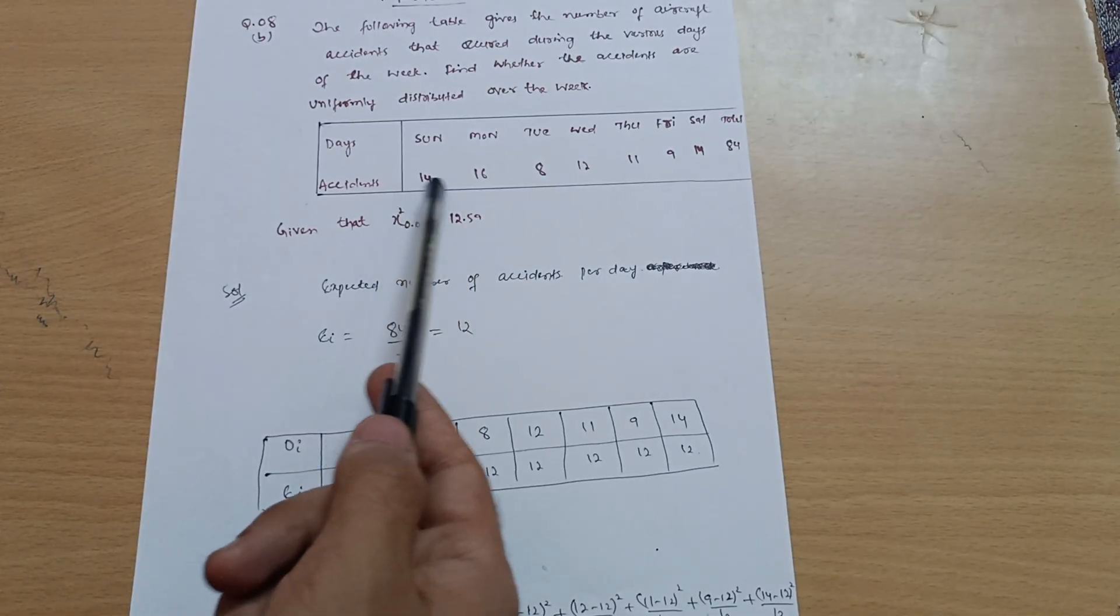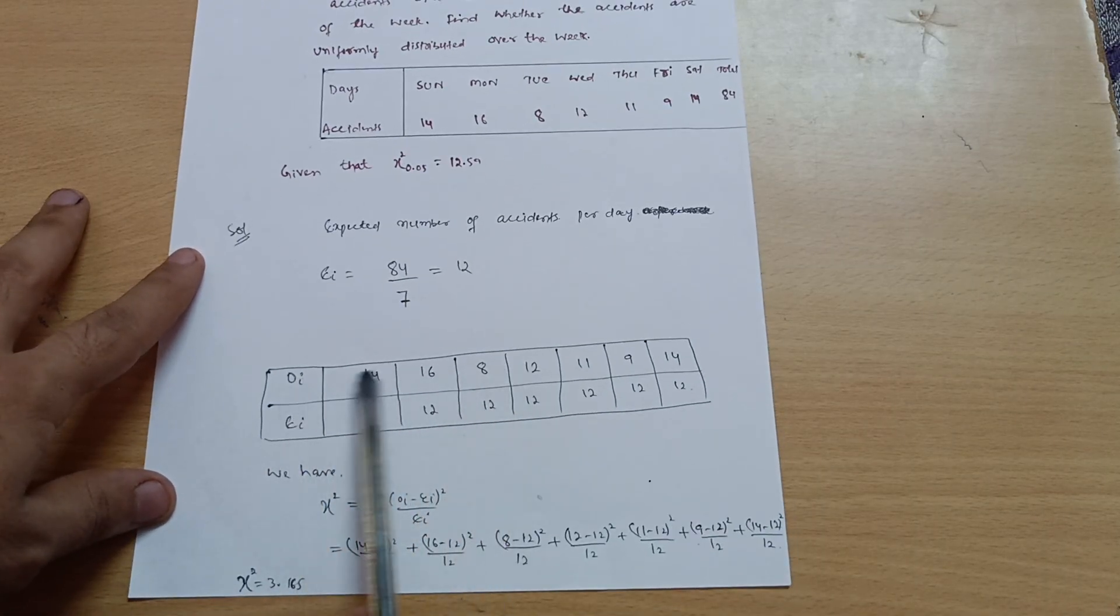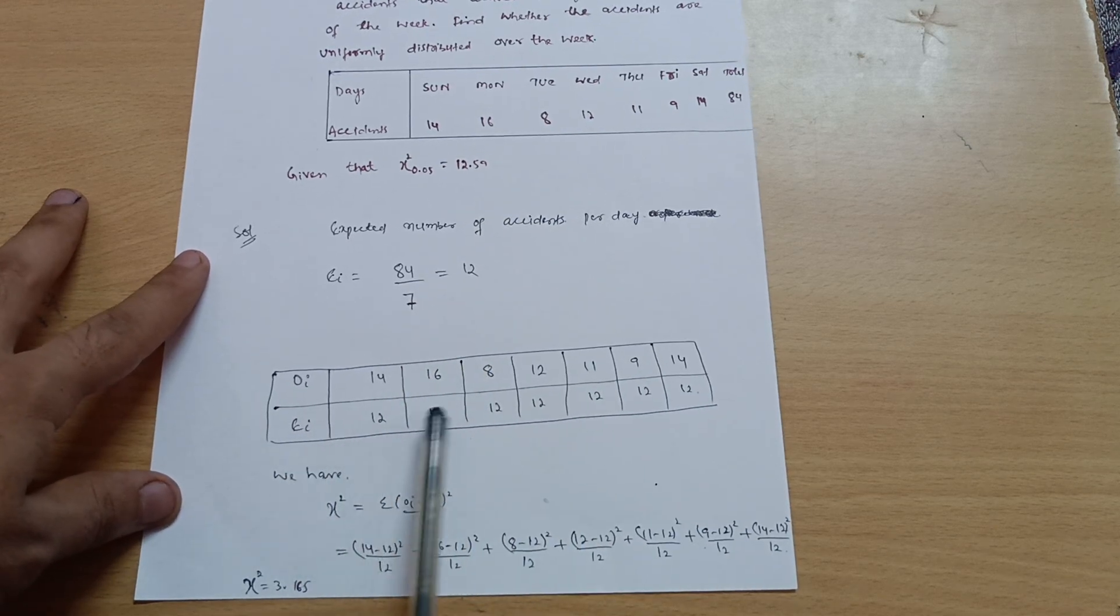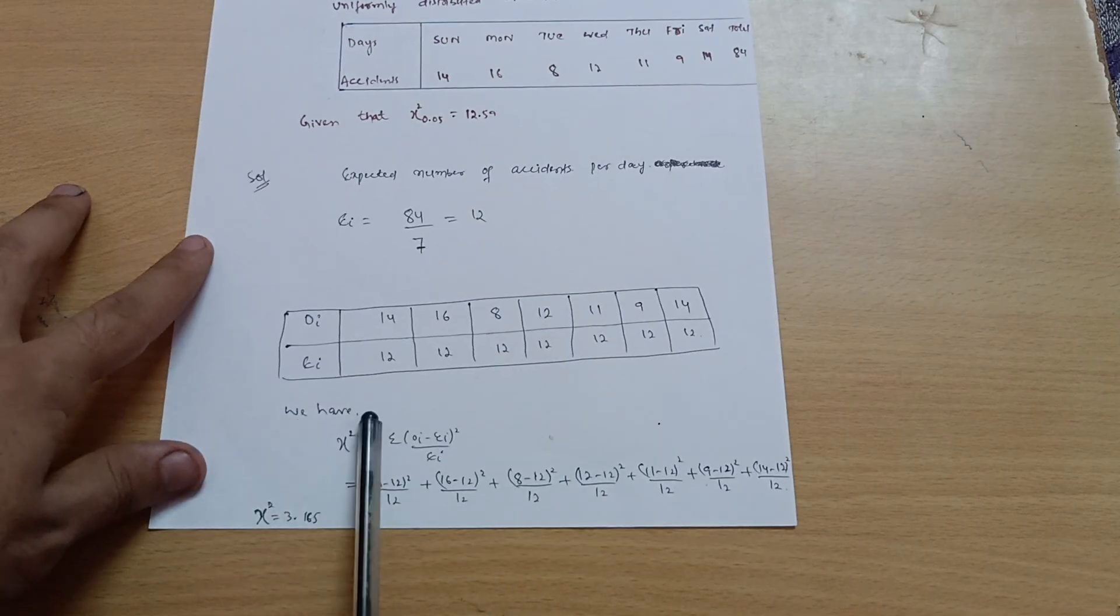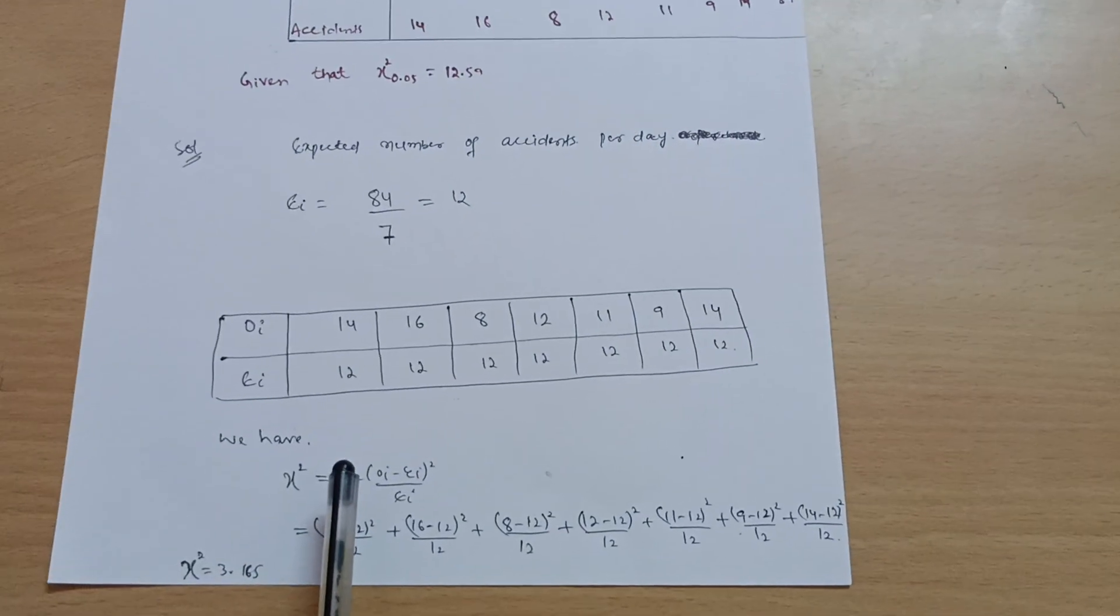But the observed values are here written in the table. So I can write down Oi equals 14, 16, these are all the observed values, and expected value is 12. So 12, 12, 12 is the expected value. We have the formula for chi-square which is equal to (Oi - Ei)² / Ei, where Oi is the observed value and Ei is the expected value.